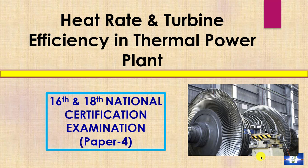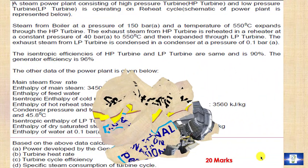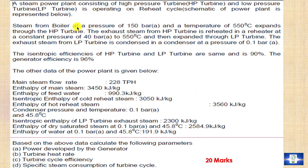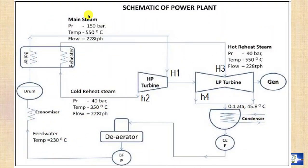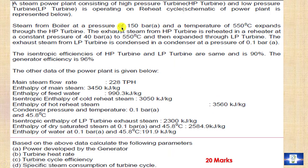The question asked in the energy auditor exam is: a steam power plant consisting of high pressure and low pressure turbine is operating on a reheat cycle. The steam from the boiler at a pressure of 150 bar and a temperature of 550°C expands through the HP turbine. The exhaust steam from the HP turbine is reheated in a reheater at a constant pressure of 40 bar to 550°C and then expanded through the LP turbine. The exhaust steam from the LP turbine is condensed in a condenser at a pressure of 0.1 bar. The isentropic efficiency of both HP and LP turbines is 90%.